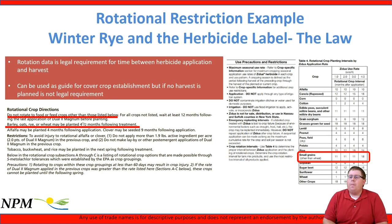Looking at an example, we examine several herbicide labels for winter rye and their rotational restrictions. A rotational restriction on a herbicide label tells us how long we have to wait between herbicide application and when we can plant a crop that's going to be harvested, to limit exposure of that food crop to herbicide residues. For herbicide A, the label says do not rotate to food or feed crops other than those listed; for all other crops not listed, wait at least 12 months following the last application. Barley, oats, rye, and wheat may be planted four and a half months following treatment.